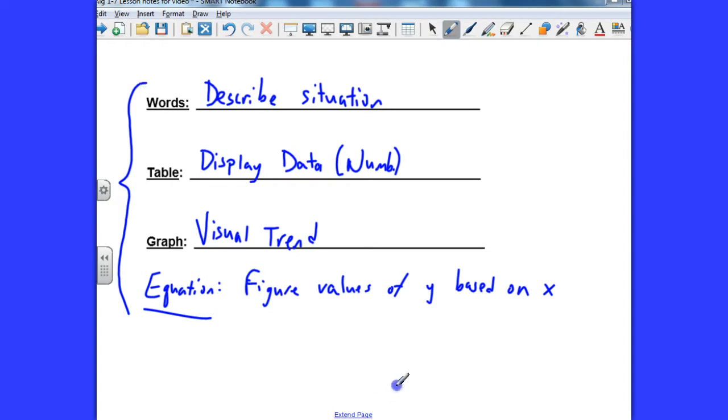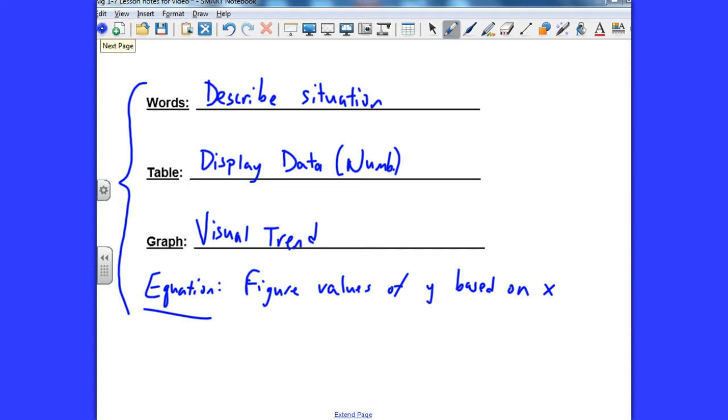So once you have that down, let's turn your paper over and see if we can work through a problem here. And I'm not sure if I'll have time to finish this or not, but we'll give it a shot. Number one says copy and complete each table. Well, you've got it in front of you, so you don't have to copy it. And it says state the domain and the range. Now, remember that from the previous video. The domain are the x values, and the range are the y values.